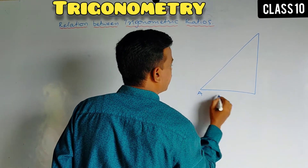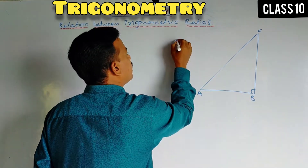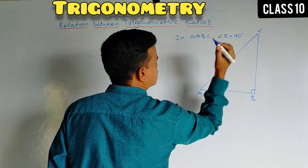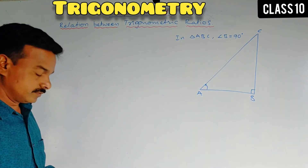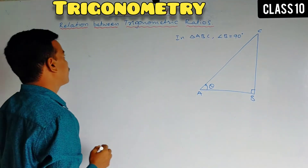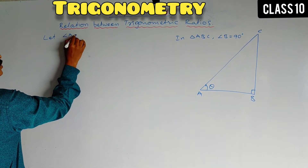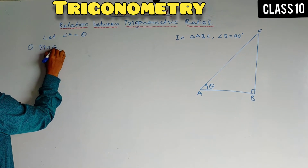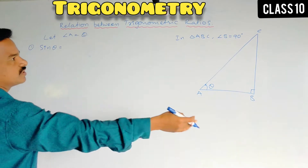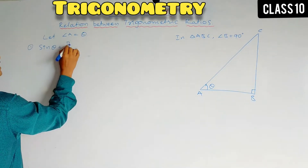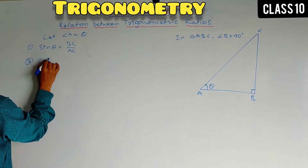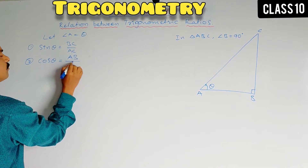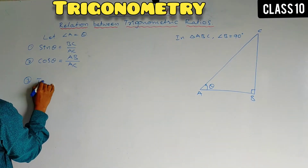It is a right angle triangle ABC, with the right angle at B. In triangle ABC, angle B is equal to 90 degrees. Let angle A equal theta. Now we find: sine theta equals opposite side by hypotenuse — opposite side is BC, hypotenuse is AC — so sine theta equals BC by AC. Cos theta equals adjacent side by hypotenuse, that is AB by AC. Tan theta equals opposite side by adjacent side, that is BC by AB.